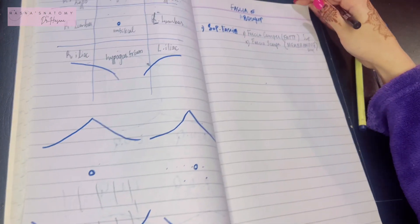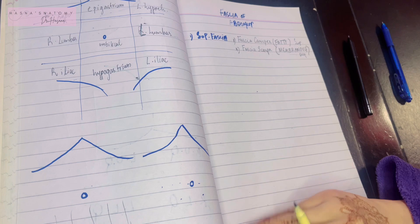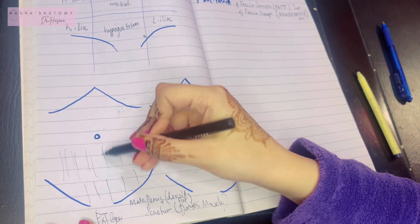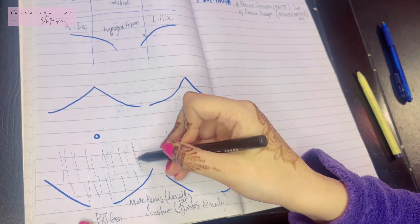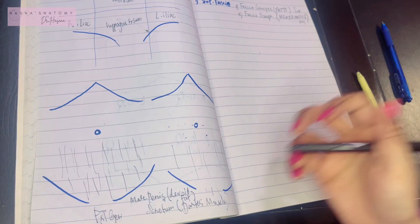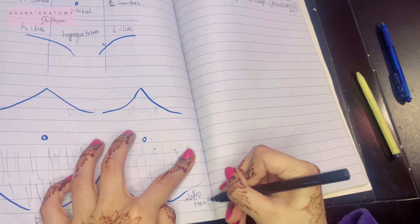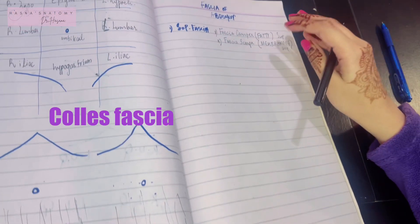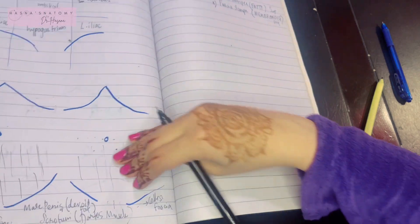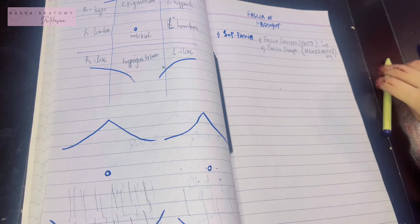Now let's talk about the deep membranous layer, or Scarpa's fascia. There is an important clinical association with this. The fascia of Scarpa surrounds the abdomen, but when it becomes continuous with the external genitalia it changes its name to Colles' fascia. So if someone asks what Colles' fascia is, it is the continuation of the deep membranous layer, or Scarpa's fascia of the abdomen, into the perineum.